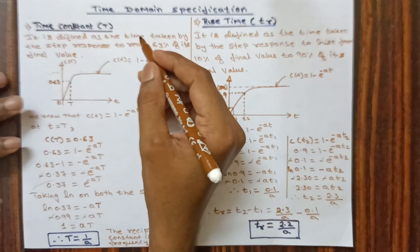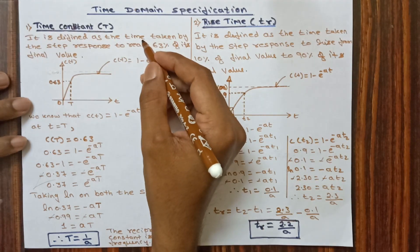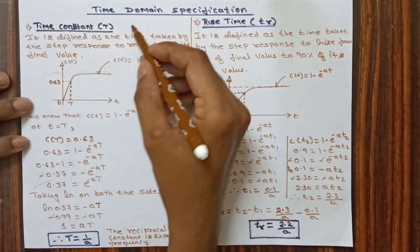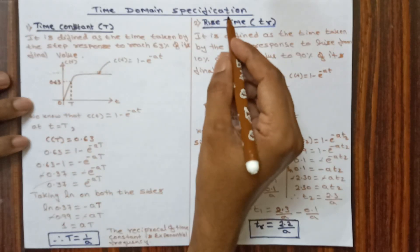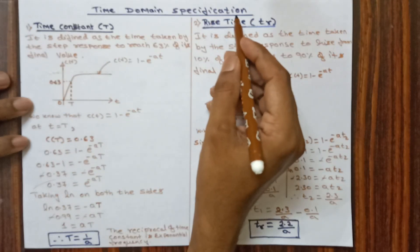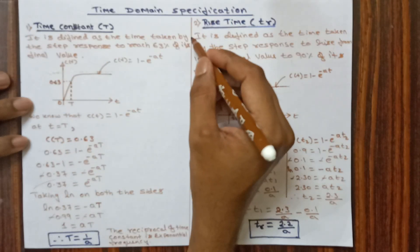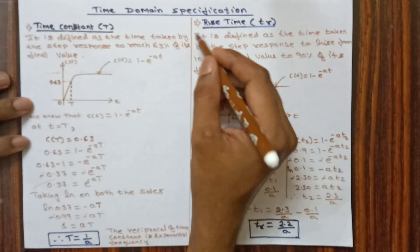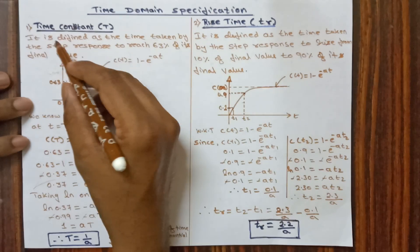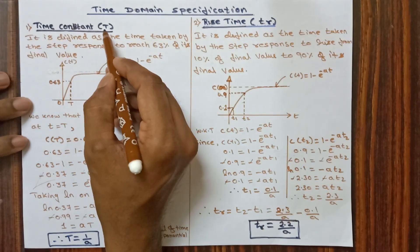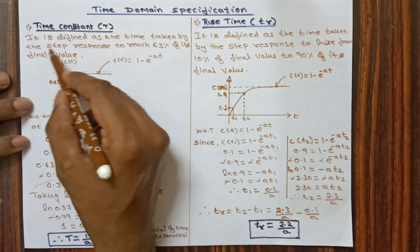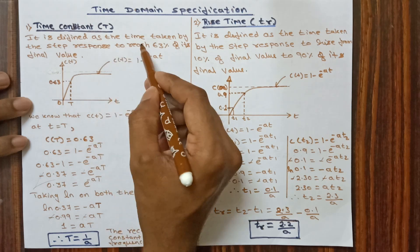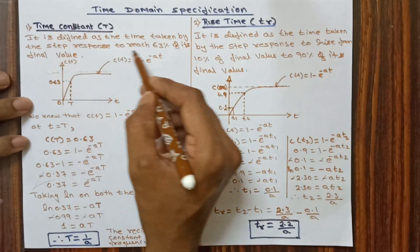Hello friends, welcome to AS Tutorials. Today we are going to discuss time domain specification of a first-order system by considering step input. The first parameter is time constant, denoted by capital T.